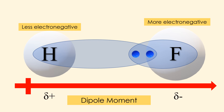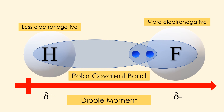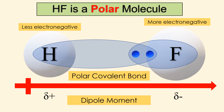Delta positive and delta negative notations can be shown at hydrogen and fluorine respectively to indicate partial positive and negative characteristics. The bond is called a polar covalent bond. Since this molecule only has one bond, we can conclude HF is a polar molecule. A dipole moment occurs between atoms of different electronegativity.